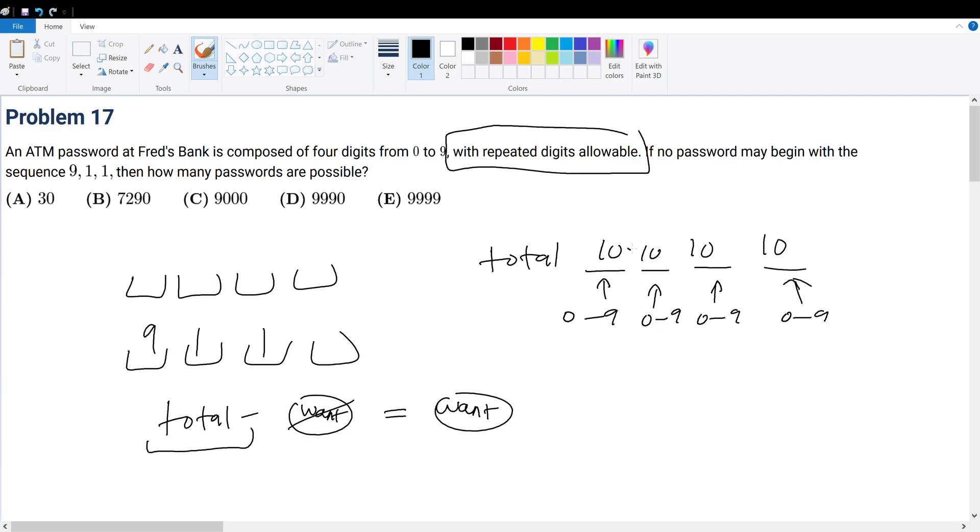Well, I multiply the number of possibilities for each digit together to get that answer, which is 1, 0, 0, 0, 0, which is 10,000. So that's my total. That's 10,000 four-digit passwords.